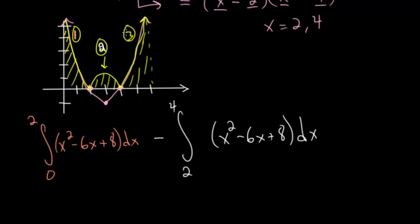This final region will just be able to drop the absolute value bar, since this entire region was already positive. So the integral from 4 to 6 of x squared minus 6x plus 8 dx.